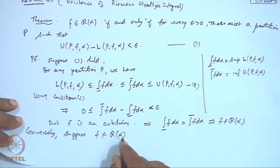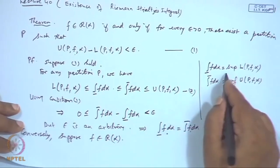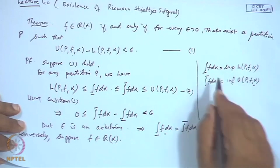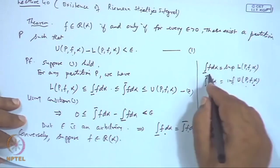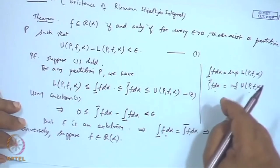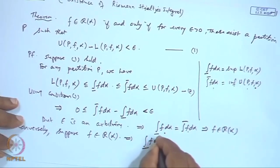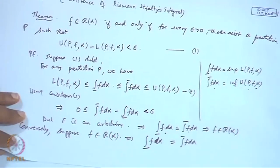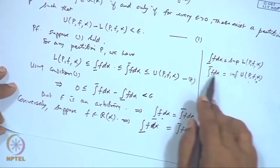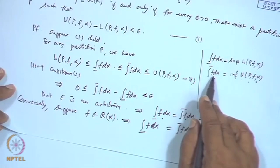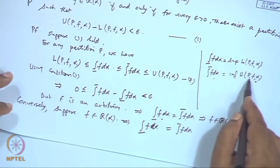Once f belongs to R(α), it means the upper and lower integrals coincide. The upper integral is the infimum of U(P,f,α) and the lower integral is the supremum of L(P,f,α). If I take a number slightly higher than the infimum, there will exist a partition P₂ where U(P₂,f,α) is less than that value. Similarly, removing the supremum, there exists a partition where L exceeds the supremum minus some ε/2.